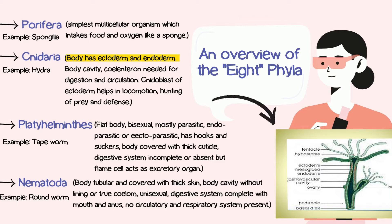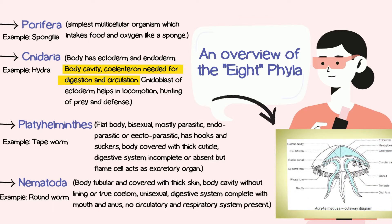The body has an ectoderm and an endoderm, meaning the body has an outer covering and an inner covering. There is a body cavity called the coelenteron, which is needed for digestion and circulation. The coelenteron aids digestion and circulation. The nidoblast of the ectoderm helps in locomotion, hunting of prey, and defense. The nidoblast is a special cell in the ectoderm, meaning the outer skin.